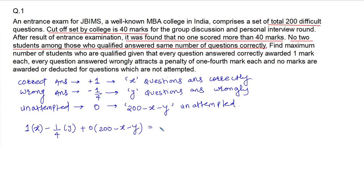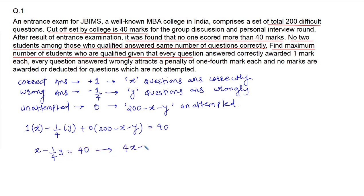This total score is supposed to be 40 marks, because we need to find the maximum number of students who qualified and no student got more than 40 marks. So the students who got exactly 40 marks are the students who qualified. Solving the equation: x minus y/4 equals 40. Multiplying both sides by 4 gives us 4x minus y equals 160.